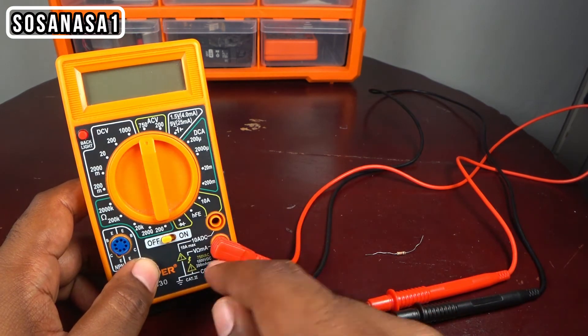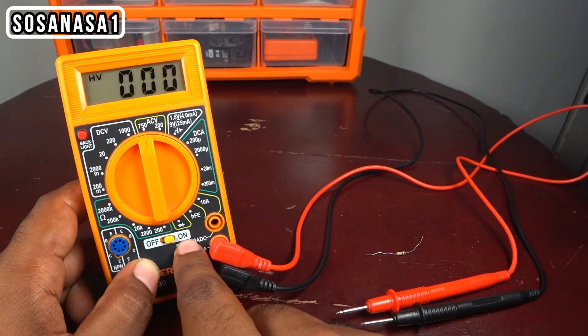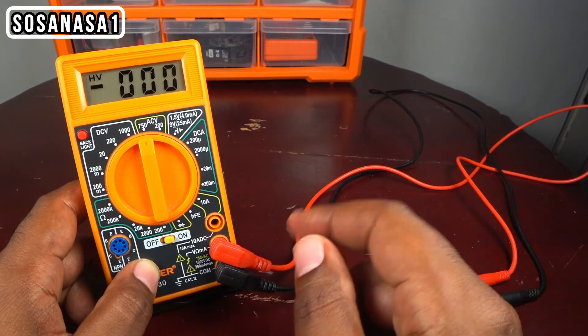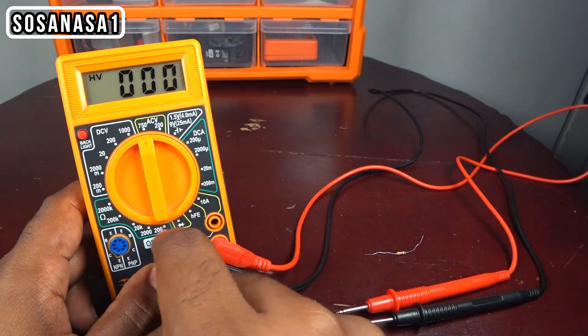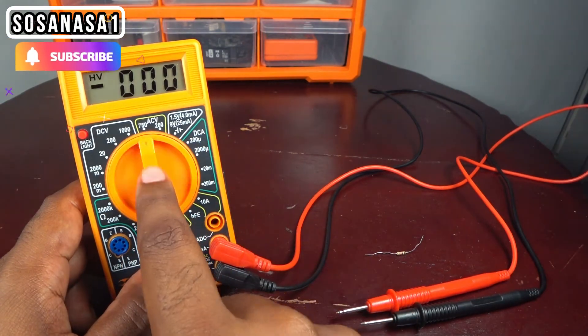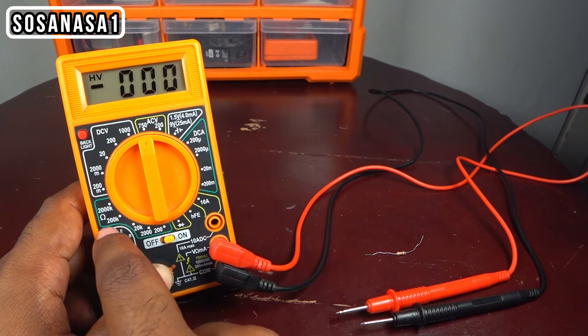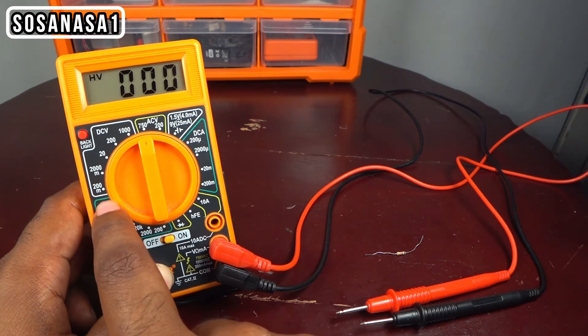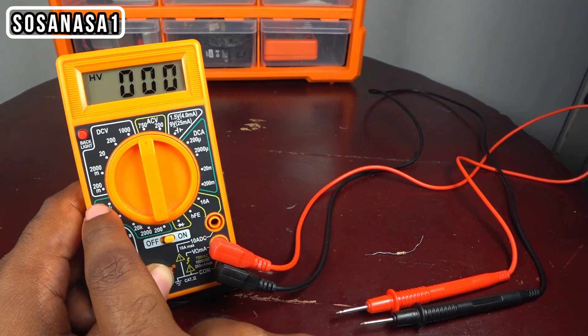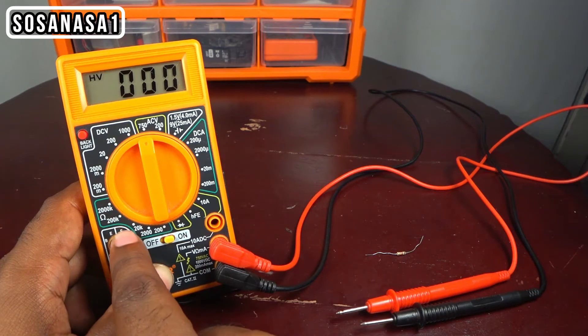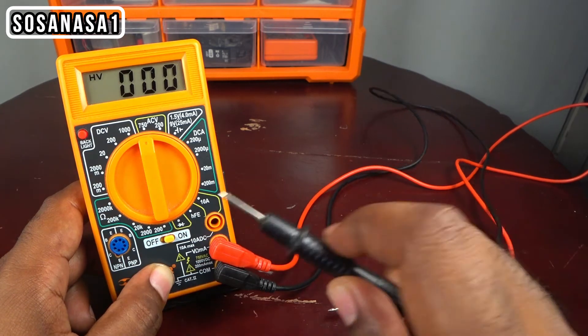You only need to move this to on position, and now you need to move this selector. If you see this area, it has a line, a green line.